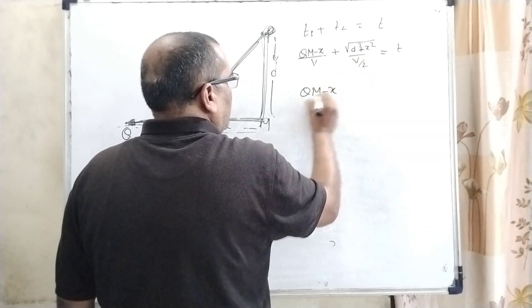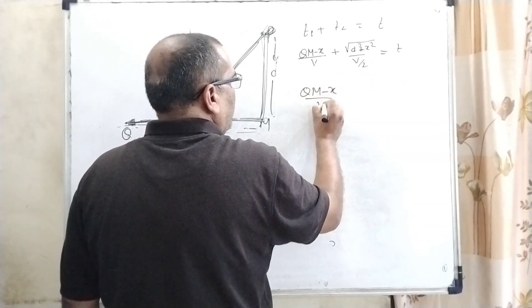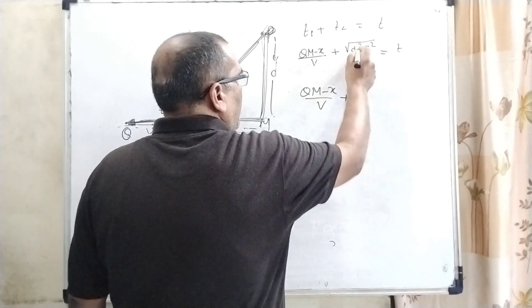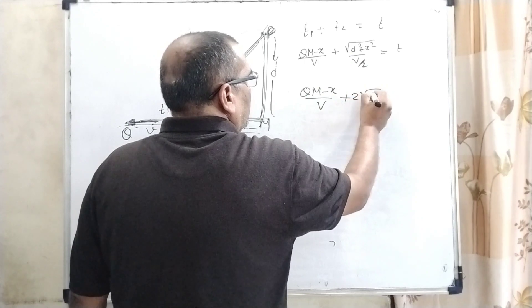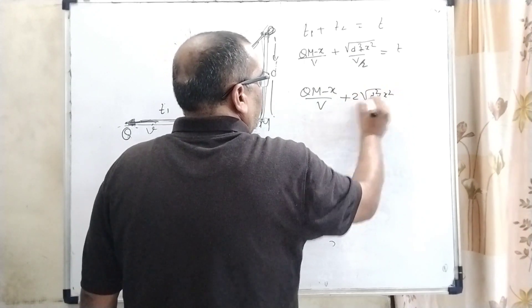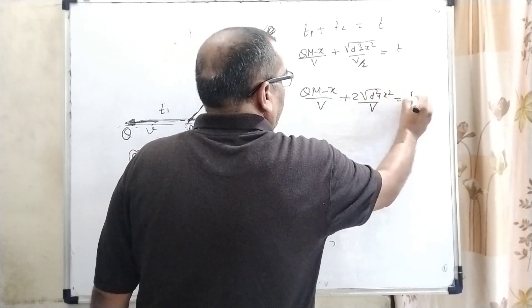It can be rearranged: QM minus x upon V plus 2 root D square plus x square upon V equals T.